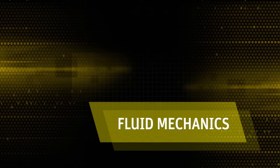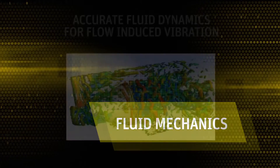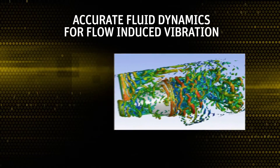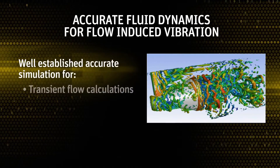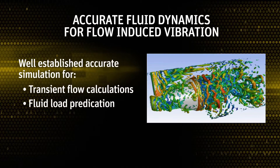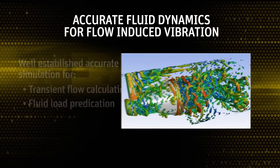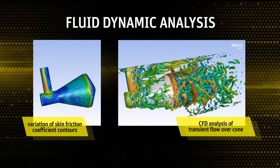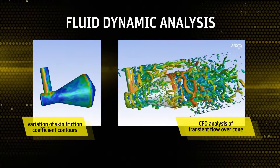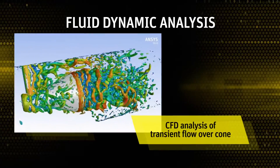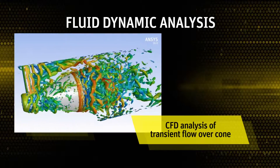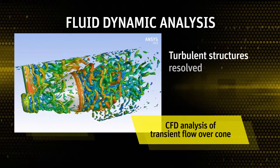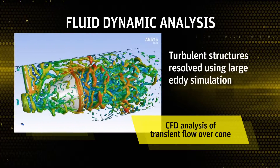ANSYS Fluid Solutions are used across a wide range of turbulent and transient flow simulations. Accurate turbulence models including DES and LES are required to predict fluid dynamics loads as well as calculate flow-induced vibration. Here we see sample results from a computational fluid dynamics analysis of the transient flow over the cone performed using ANSYS Fluent, showing turbulent structures resolved using large eddy simulation.